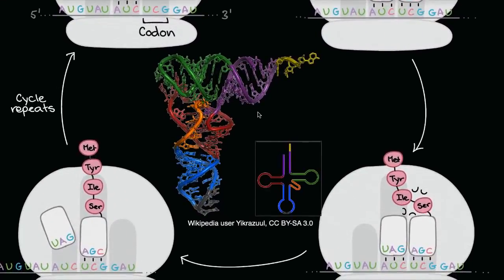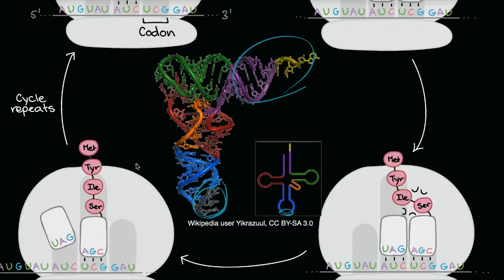If we look at what tRNA actually looks like — this is still just a visualization — you get a sense that it's a sequence of RNA with a two-dimensional structure that wraps around itself to form a fairly complex molecule. The anticodon, which is in the middle of the sequence, forms the basis for one end of the molecule — that's the part that pairs with the codon on the mRNA. At the other end of the molecule is where you actually bind to the appropriate amino acid.